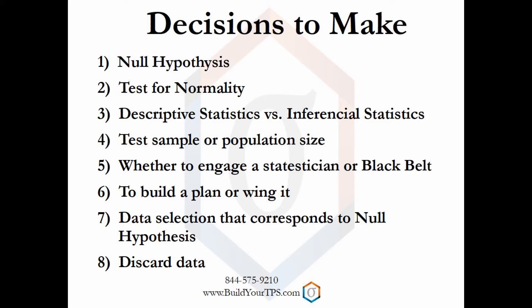A black belt or statistician can help make sure that there is an alignment between the data and the conclusion you're trying to make. It is important that data selection is randomized. At first glance, you should never discard any data. If you're not happy with an extreme data point, then select a larger sample size, but don't throw away that data point.